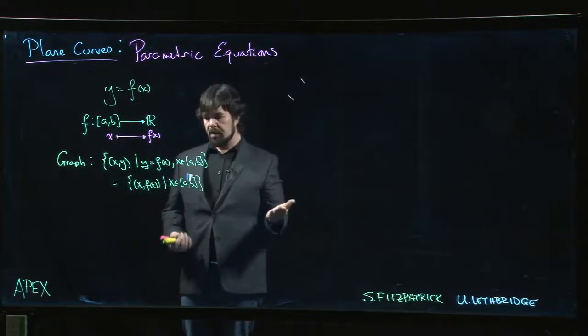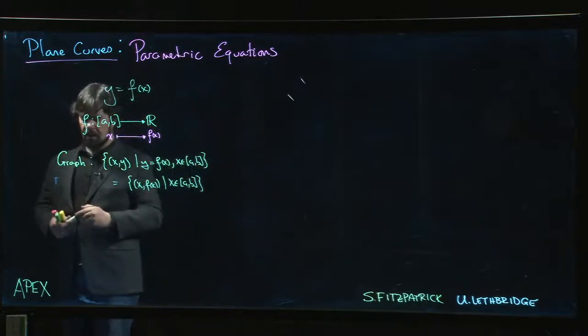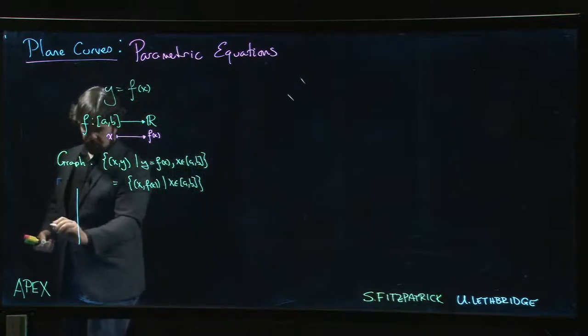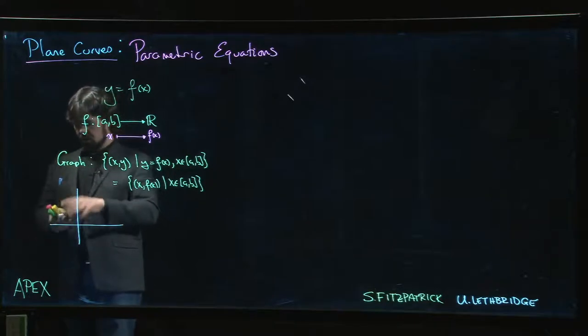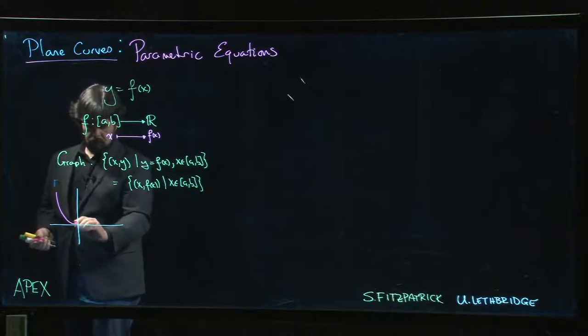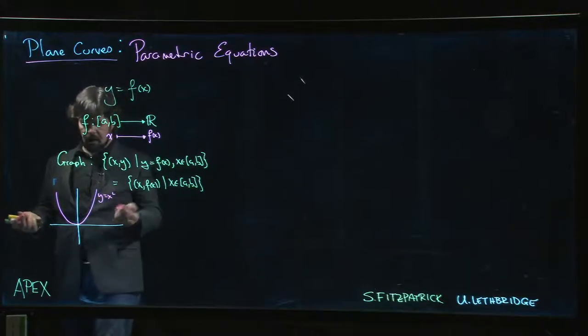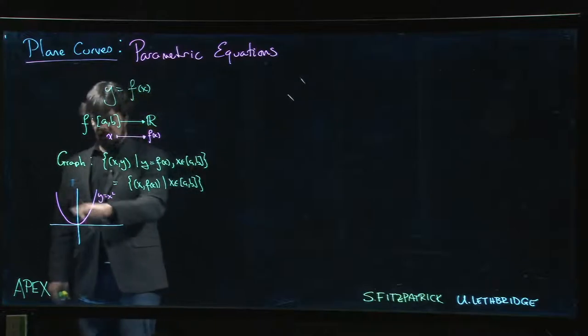So graphs look like that, but we know there are a lot of limitations on what you can do with the graph. Graphs have to pass the vertical line test. So we know we can do something like y is equal to x squared. That's fine, that's a graph.